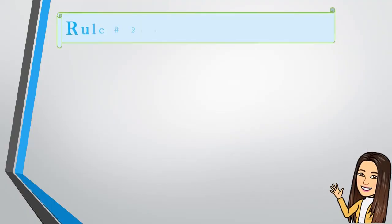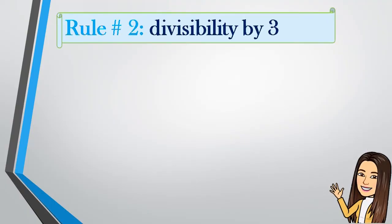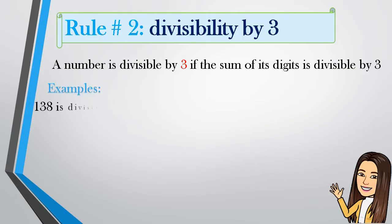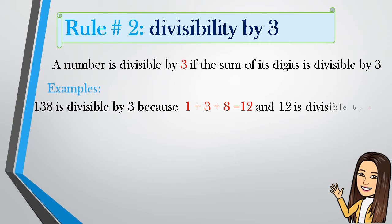Rule number 2: Divisibility by 3. A number is divisible by 3 if the sum of its digits is divisible by 3. Example: 138 is divisible by 3. Why? Because 1 plus 3 plus 8 equals 12, and 12 is divisible by 3.